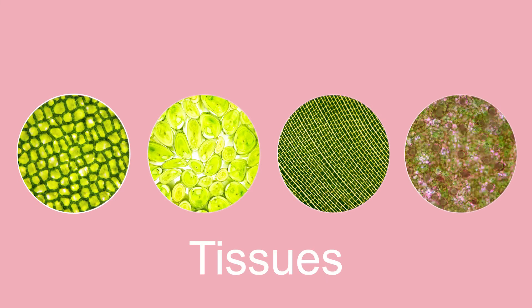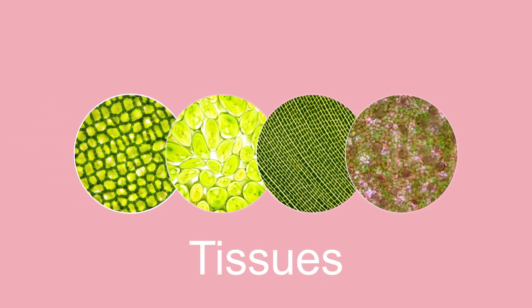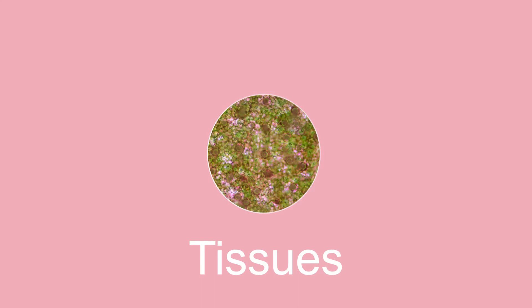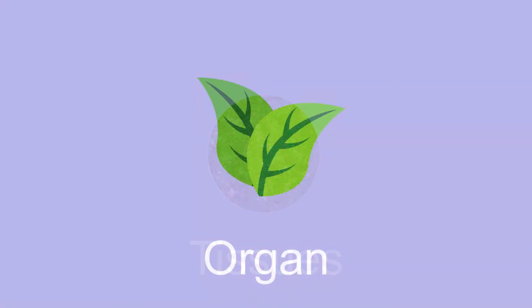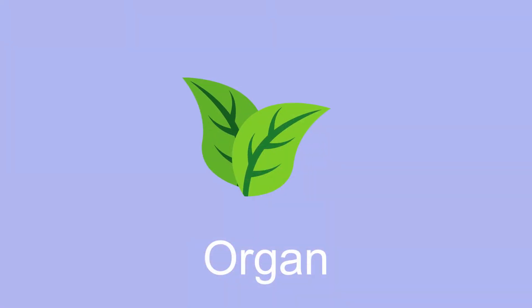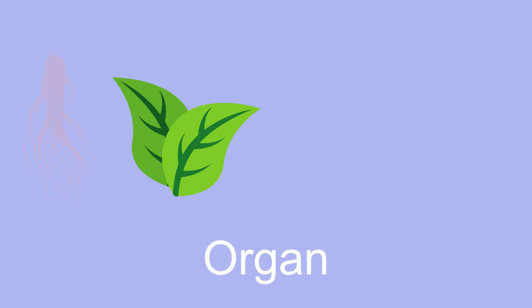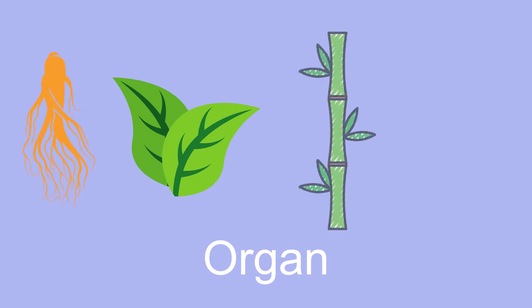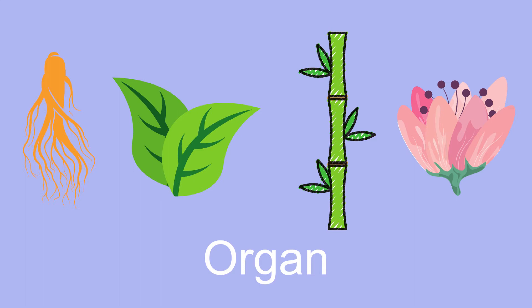A collection of tissues grouped together performing a common function is called an organ. Organs are also present in plants, including roots, leaves, the stem, and reproductive organs.